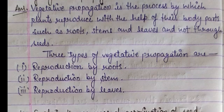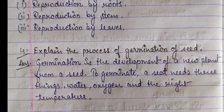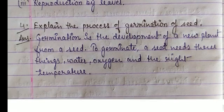Three types of vegetative propagation are reproduction by roots, stem, and leaves. Fourth question: explain the process of germination of a seed.